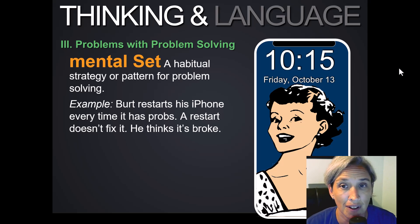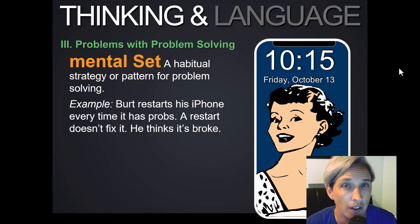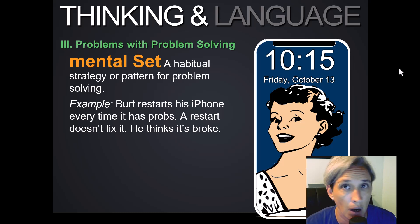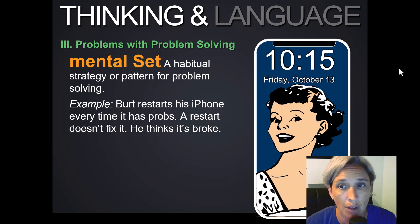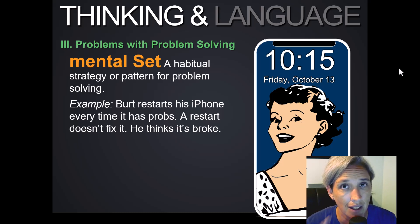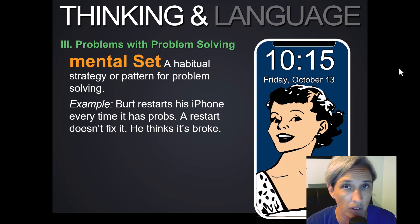First off, we start with a mental set. The problems that we face when we are problem solving is that we get stuck in rigid thinking because it's a way that has worked for us in the past. For example, Bert has a problem with his iPhone. He restarts it because that's what he typically does, but this time it doesn't work and he thinks the phone is broken. He gets stuck in that mental set because that's what has always worked for him in the past.